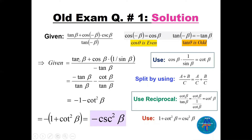So the expression becomes tan(β) + cos(β) · csc(β), which is 1 over sin(β), and there is a minus tan(β) in the denominator. Now I can split a plus b over c into a over c plus b over c. So I split: tan(β) divided by tan(β), and also cosine of beta times 1 over sine of beta divided by tan(β).